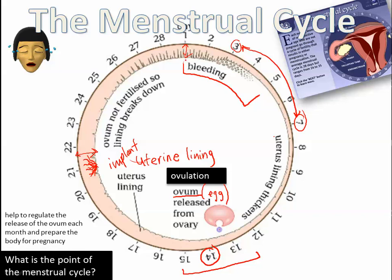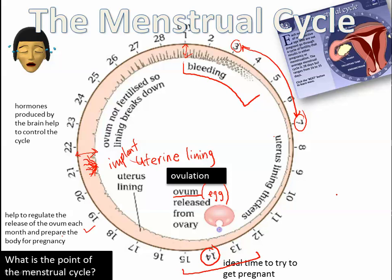Here are some other notes: the point of the menstrual cycle is to regulate the release of the ovum each month and prepare the body for pregnancy. The hormones produced by the brain help control the cycle. Day 14 is the ideal time to try to get pregnant because that is when the egg is usually going to be released.